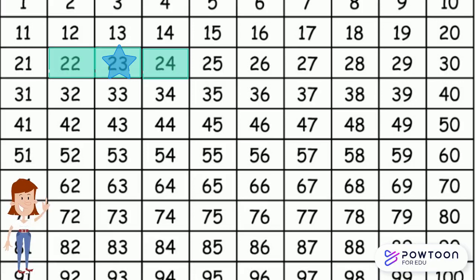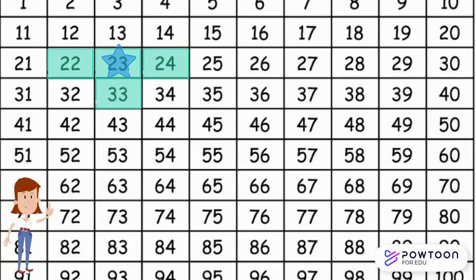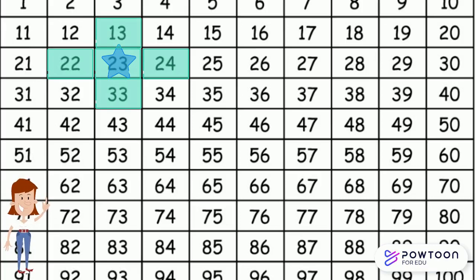So if I wanted to add 10, I would go down by 1 row. If I wanted to subtract, I would move the other direction — I would move up. And moving up would take me from 23 to 13. So 23 minus 10 would be 13.